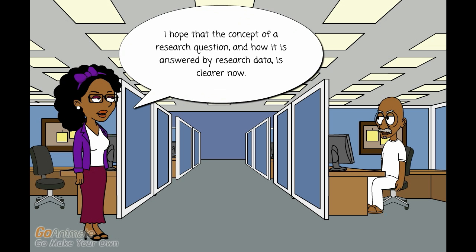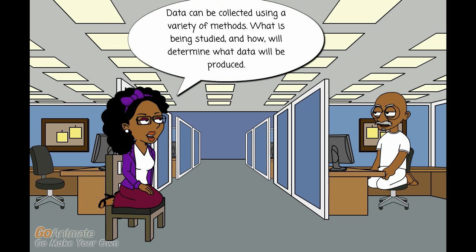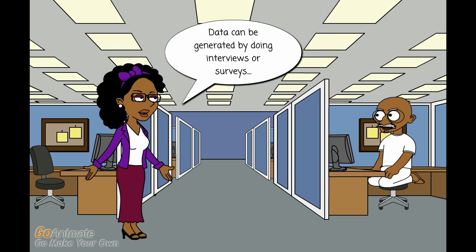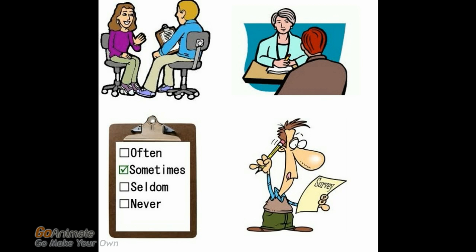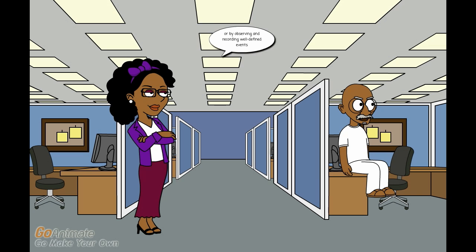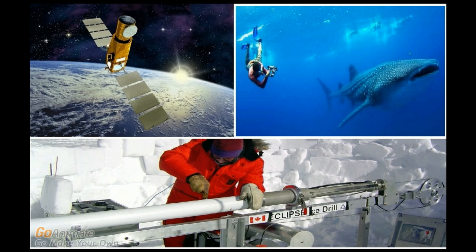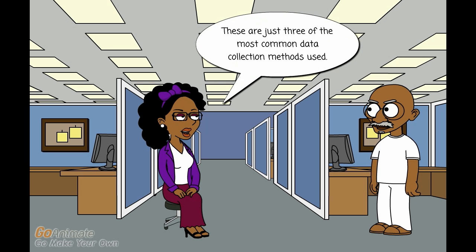I hope that the concept of a research question, and how it is answered by research data, is clearer now. Now that we know that research data is an integral part of the research process, we might wonder how it is collected or generated. Data can be collected using a variety of methods. What is being studied, and how, will determine what data will be produced. Data can be generated by doing interviews or surveys, or by doing experiments or clinical trials, or by observing and recording well-defined events. These are just three of the most common data collection methods used.